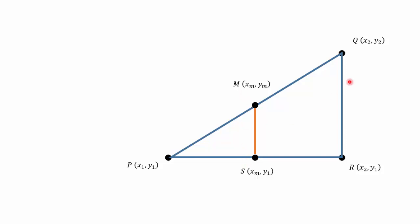Now, MS will be perpendicular to QR. So we know that M is the midpoint of PQ. So PM to PQ should be in the ratio of 1 to 2 because it bisects PQ.